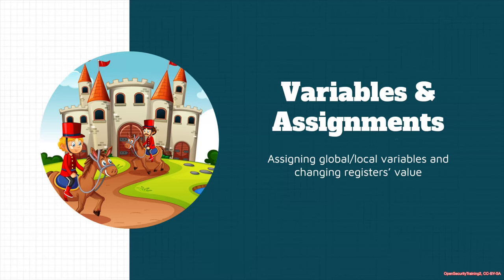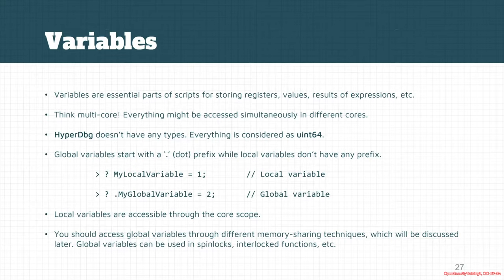Now let's see how we assign variables and how assignments work in HyperDBG. Variables are essential for storing registers, values, results of expressions, or anything else in the script engine. When it comes to multi-core scenarios, everything might be accessed simultaneously in different cores, so we need to have some considerations.